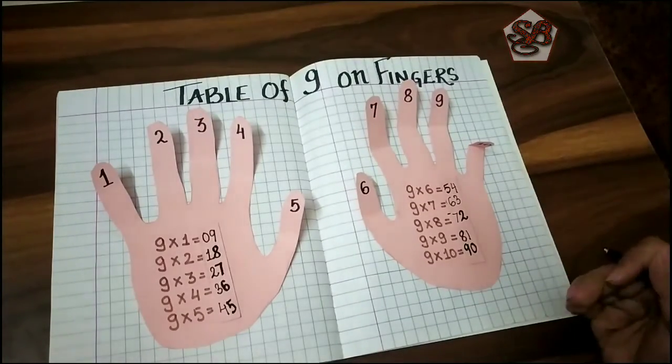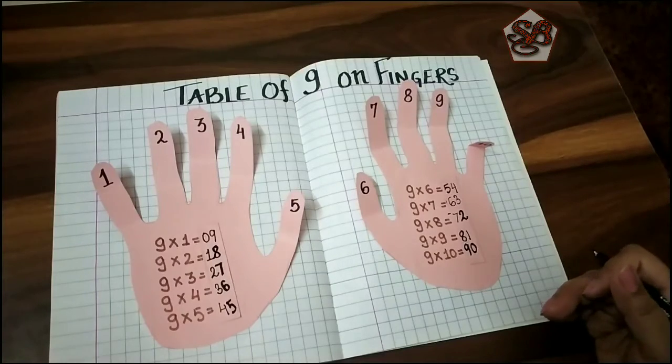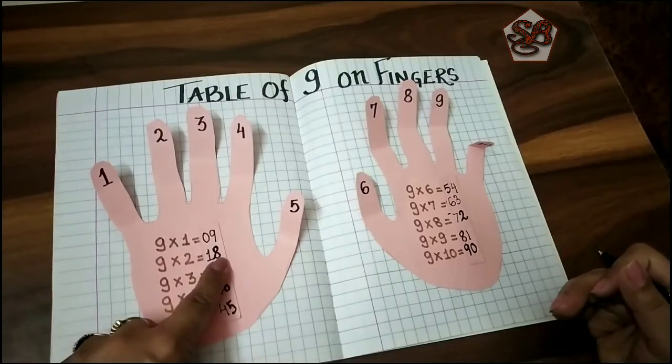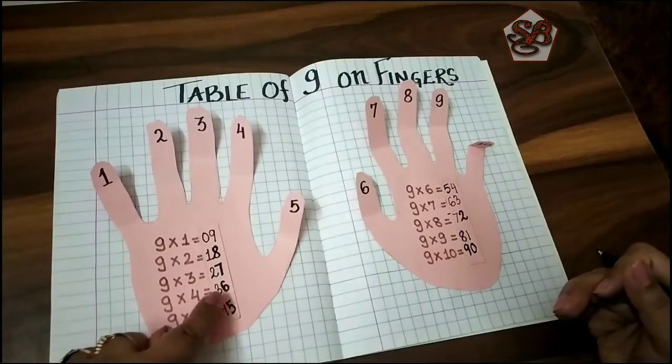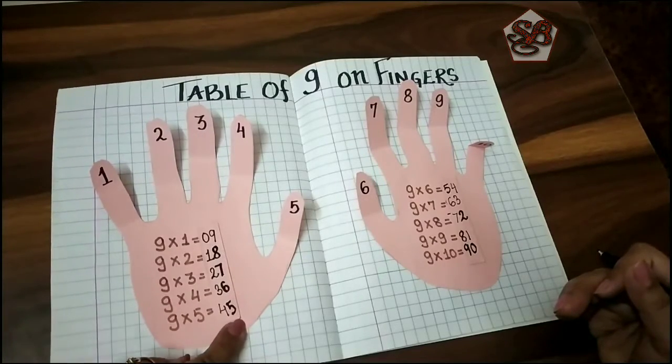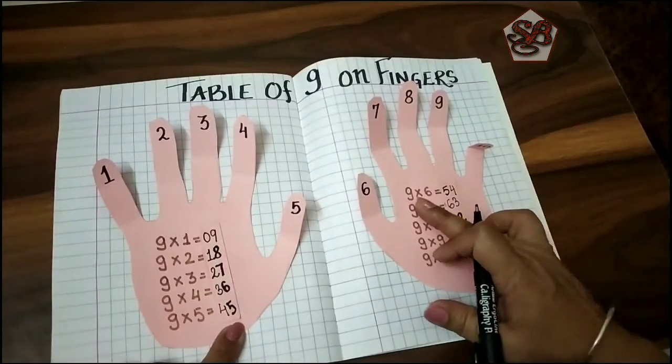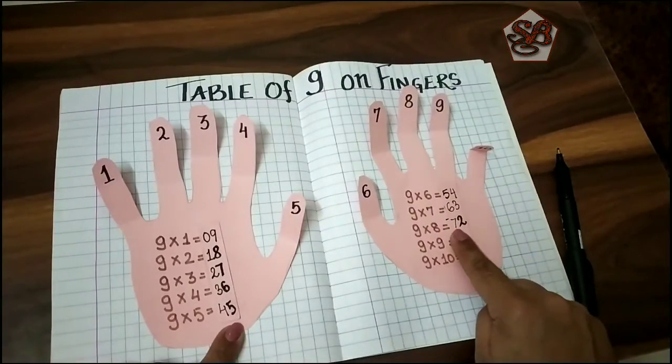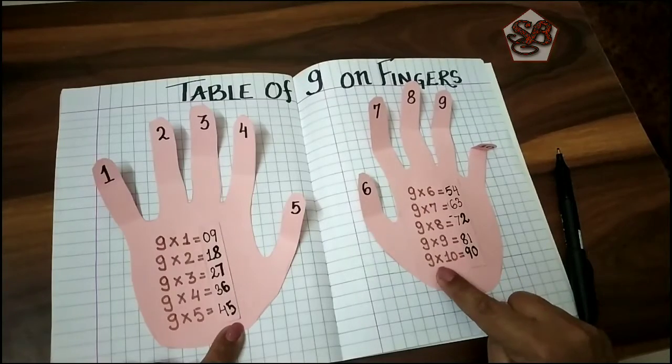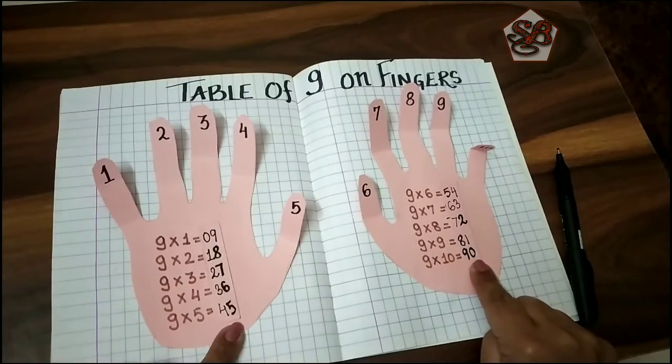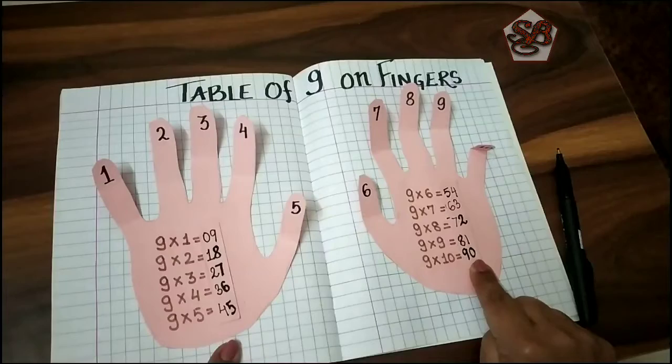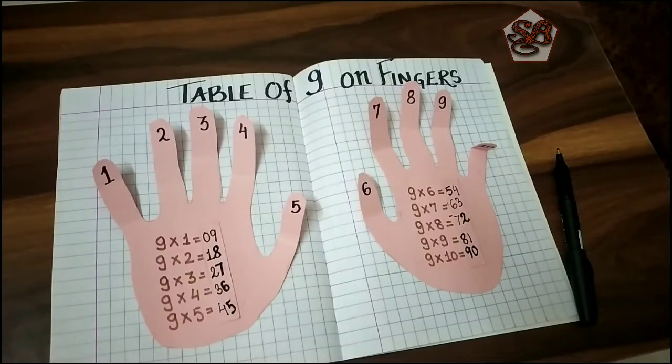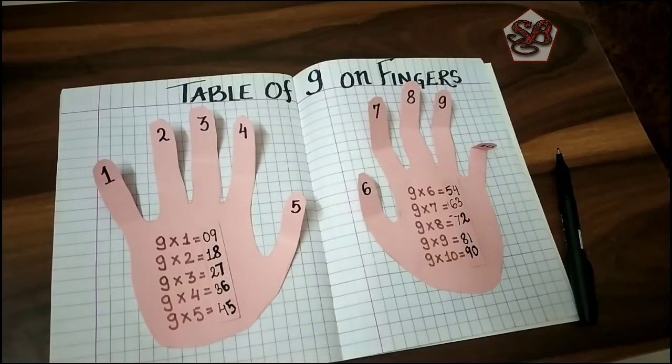So here we are ready with the table of nine. Nine ones are nine, nine twos are eighteen, nine threes are twenty-seven, nine fours are thirty-six, nine fives are forty-five, nine sixes are fifty-four, nine sevens are sixty-three, nine eights are seventy-two, nine nines are eighty-one, and nine tens are ninety. Hope you enjoy doing this activity and it makes it easy to learn the table. Have a great time!